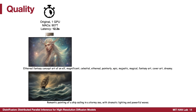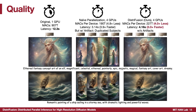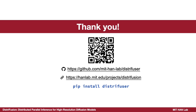Here we show our quality results. These are the original images. Using naive parallelism without any interaction can achieve a 3.9 times speedup, but the images have noticeable duplicated subjects. Our DistriFusion well preserves the quality with no visual differences at 3x speedup. Thank you very much for listening.